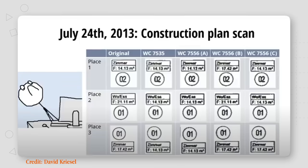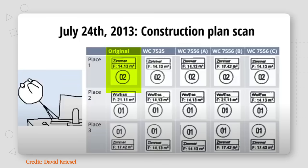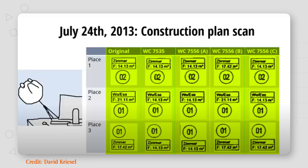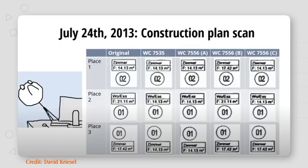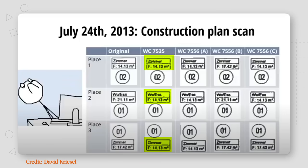So this is what he found. The measurements from the original blueprint are in the first column labelled 'original,' and the square footage of each of the three places is 14.13, 21.11, and 17.42 metres squared. Each subsequent column represents the result of a different scan from a different Xerox machine. The scanners totally messed it up — in the first Xerox column, all three places now show the exact same square footage. The same is true in the second one. In the third, two places are correct but one now shares the square footage of another. The last column is also wrong, but in a different way.